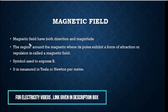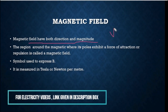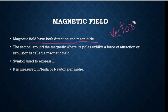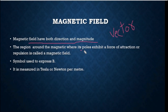The magnetic field is a vector quantity. Why? Because magnetic field has direction — there are two directions in a magnetic field. This means that it is a vector quantity. The region around a magnet where it exhibits a force of attraction or repulsion is called the magnetic field.